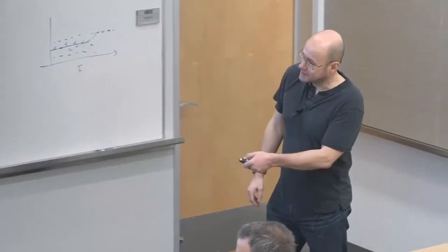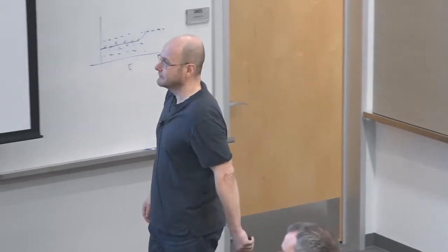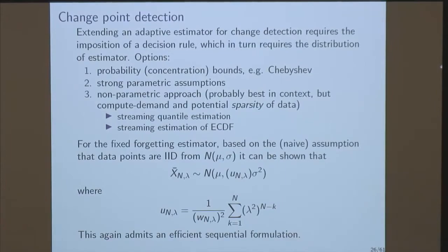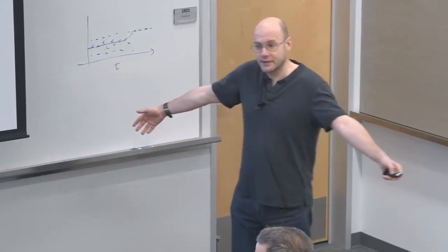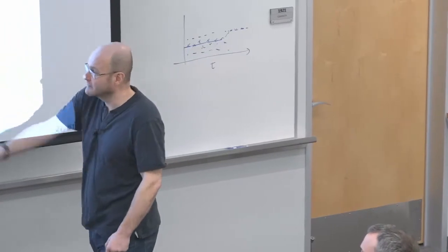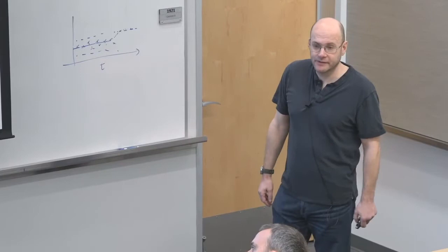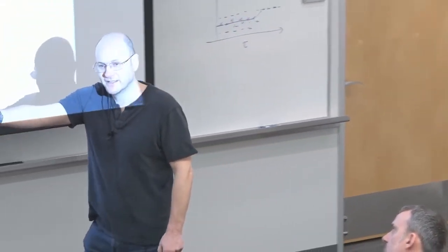If we do let everything be Gaussian and make assumptions about how the estimator behaves if lambda were fixed, everything drops out beautifully. From there, we can define a prediction interval — the control limit. Alpha is the confidence coefficient — how many times do you want to get it wrong? We can only extend this approximately to the time-varying forgetting factor, since the time-varying forgetting factor induces correlation because we've used the data.